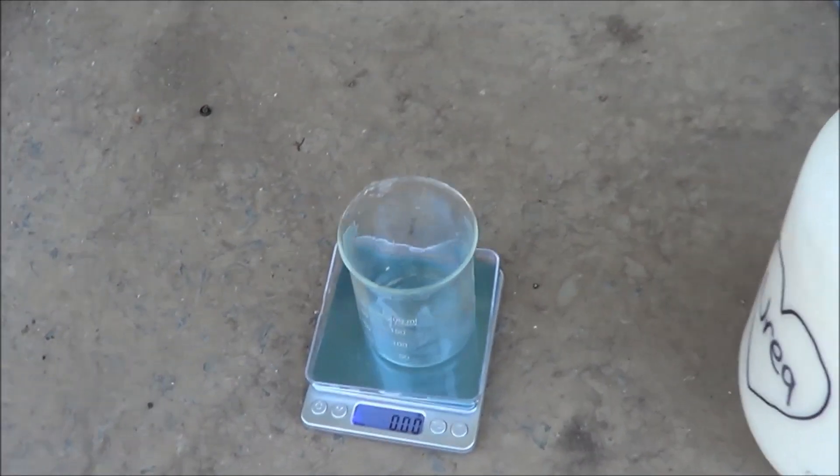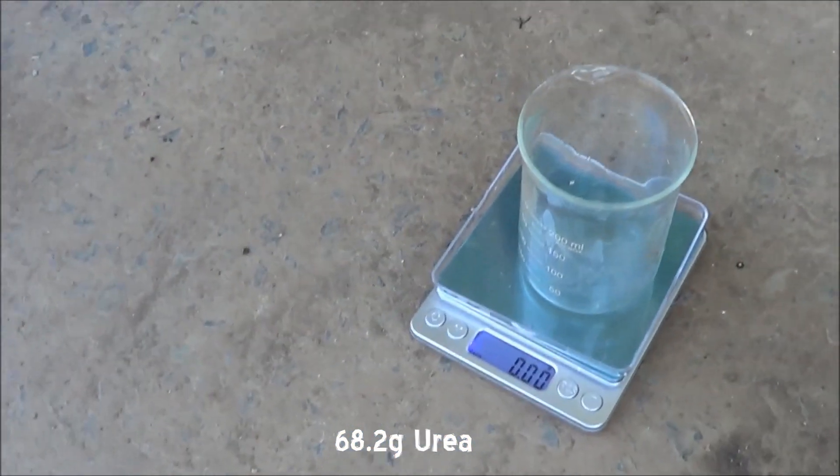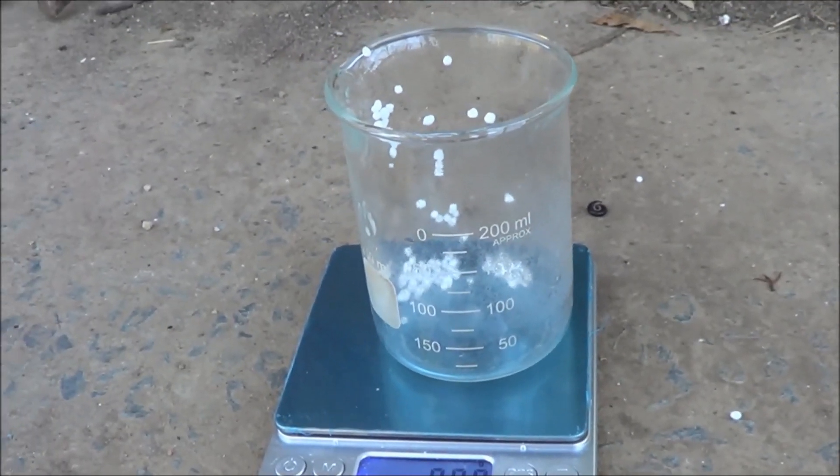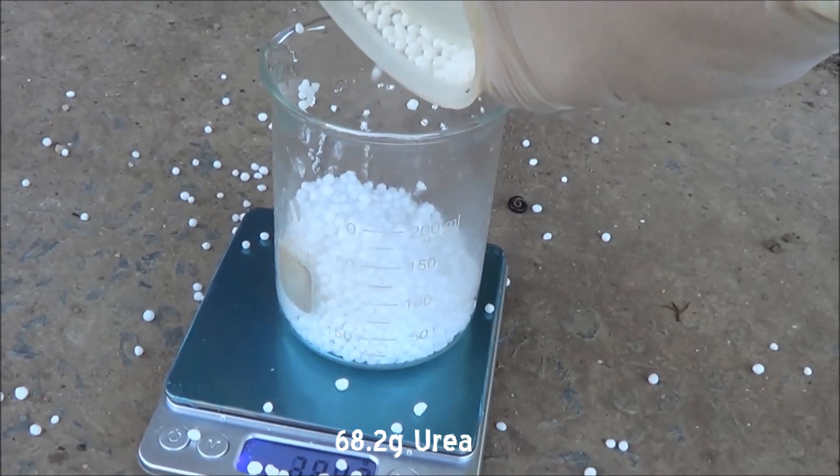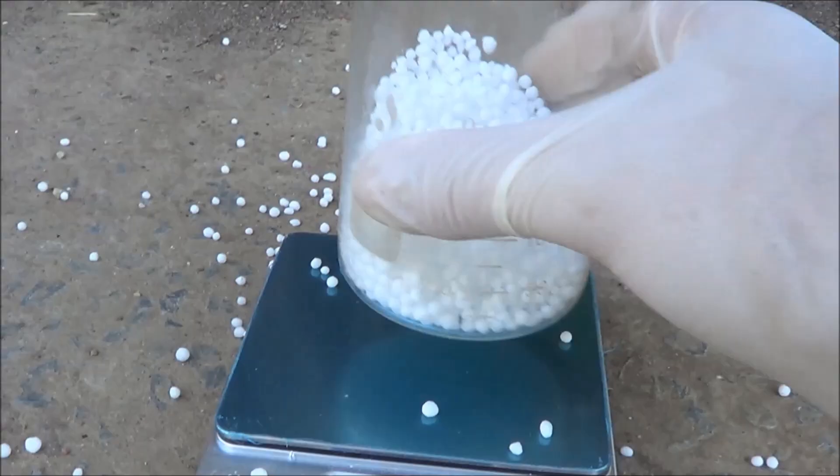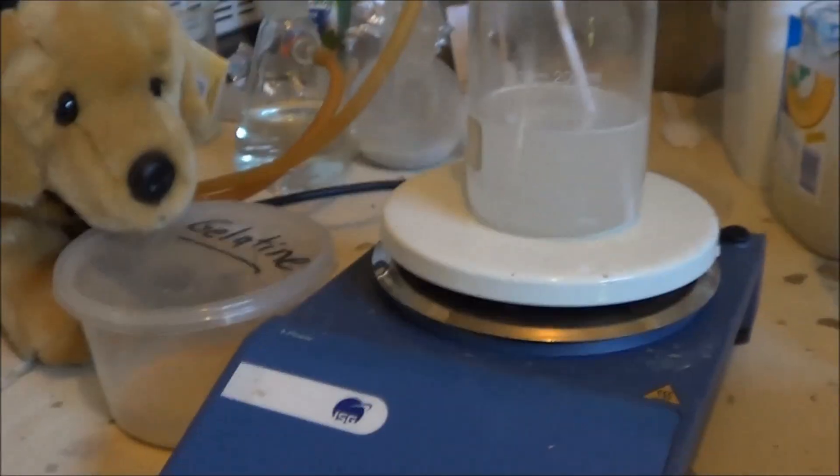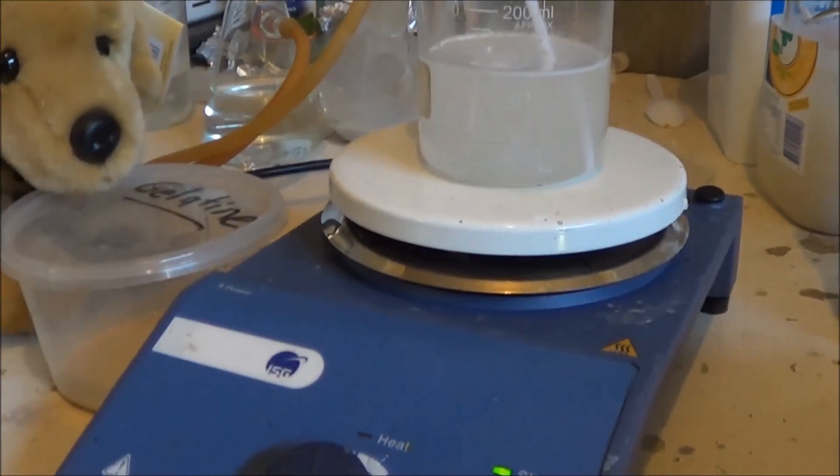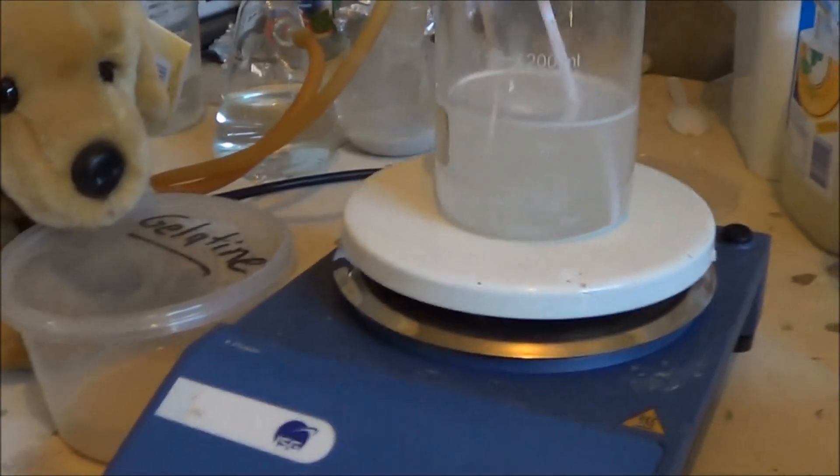Now we're going to need 68.2 grams of urea, which we will carefully weigh out in here. I've got the urea dissolving in about 60 mils of hot water. Even if you add really hot water to it, you're going to have to heat it up to get it all dissolved because the urea dissolving is very endothermic.